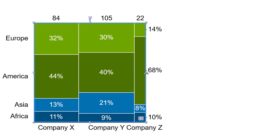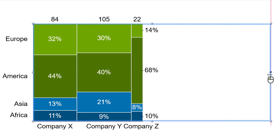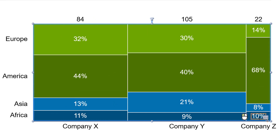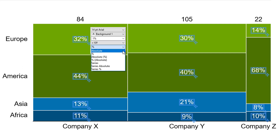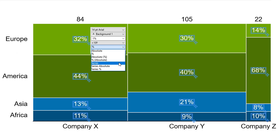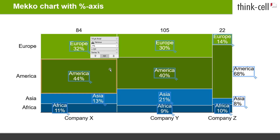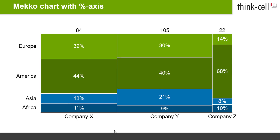Resize the chart if necessary. Multi-select the segment labels and pick your preferred option from the Label Content Control. You can choose between displaying absolute values, relative values, or both, the name of the series, or a combination of the series name with absolute or relative values. Now your Mecco chart with percent axis is complete.